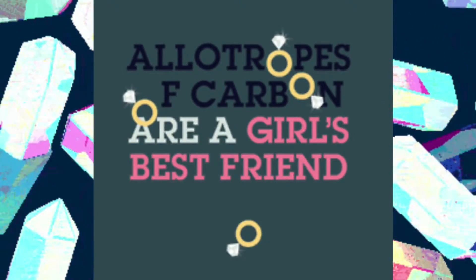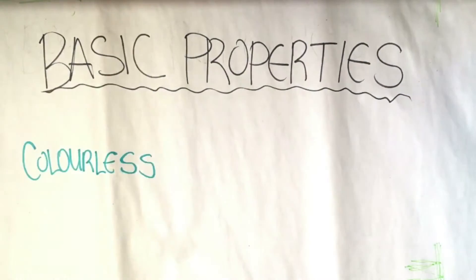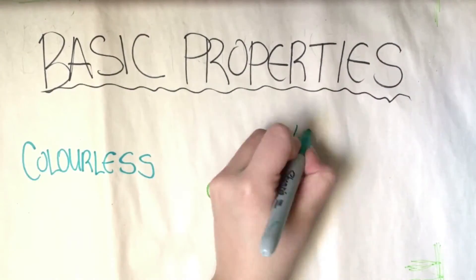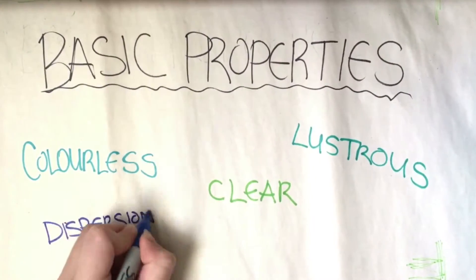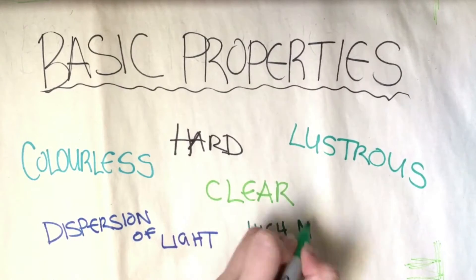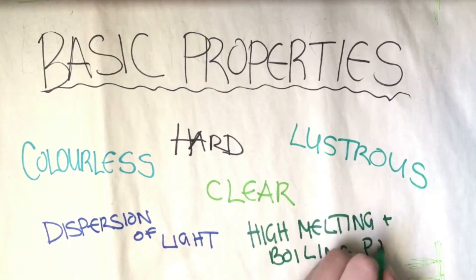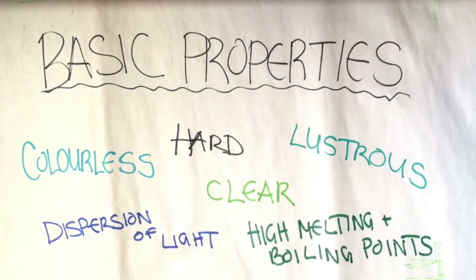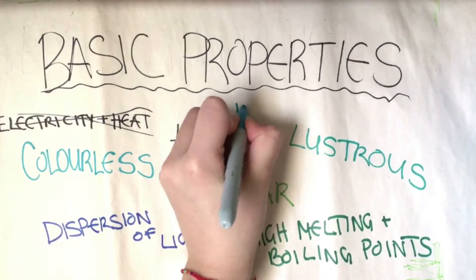Can you guess what I'm going to be talking about first? That's right — diamond. Starting with some basic properties: diamond is colorless, clear, and lustrous, has a dispersion of light, which makes it great for jewelry. It's also hard and has a high melting and boiling point, making it valued for industrial uses. Diamond does not conduct electricity or heat and is insoluble in water.